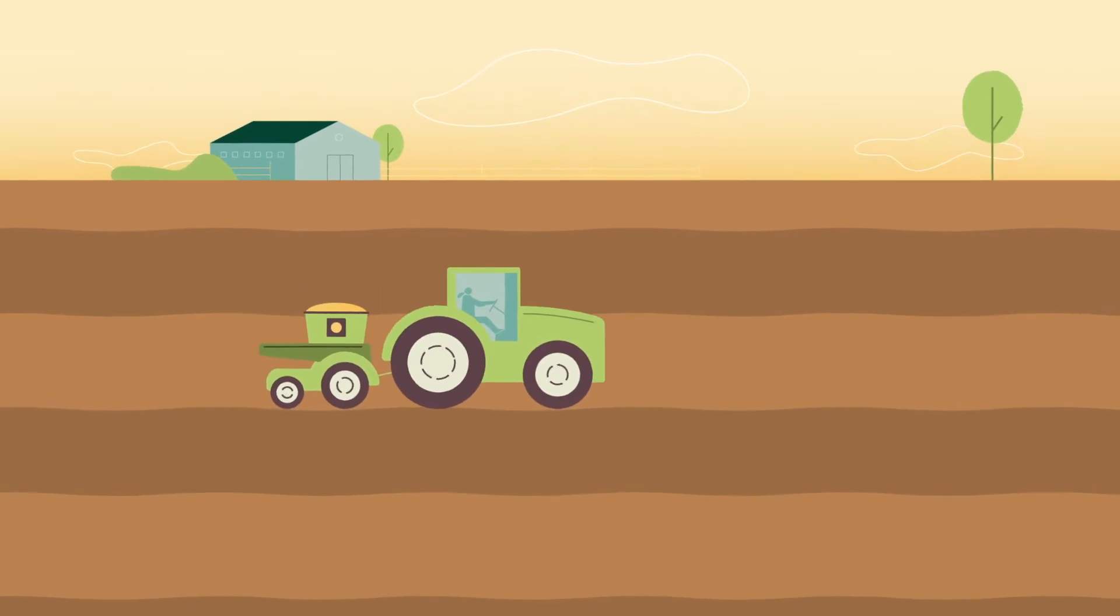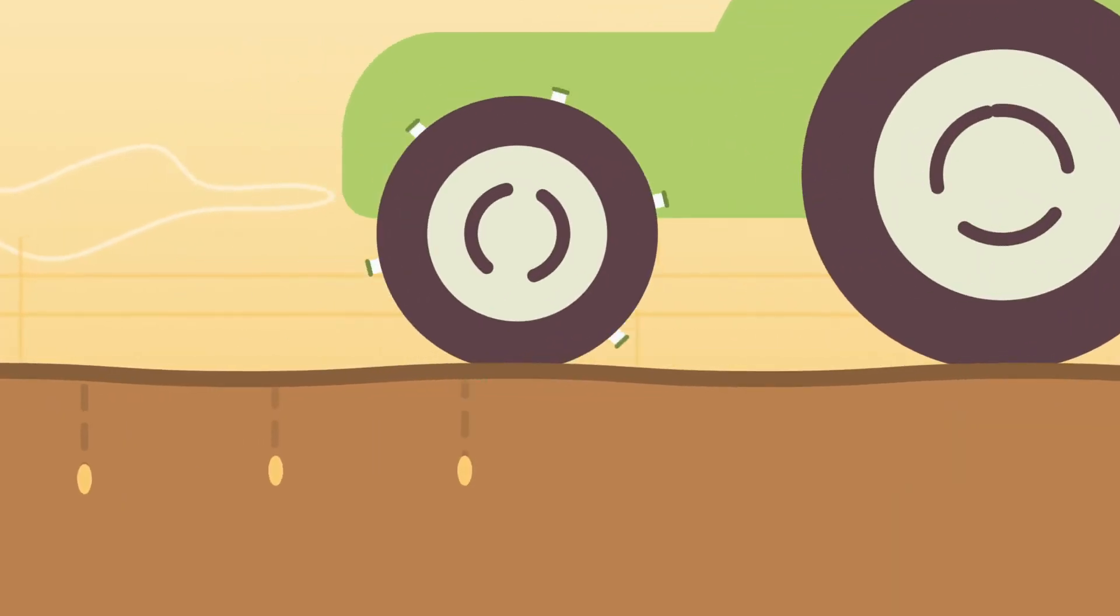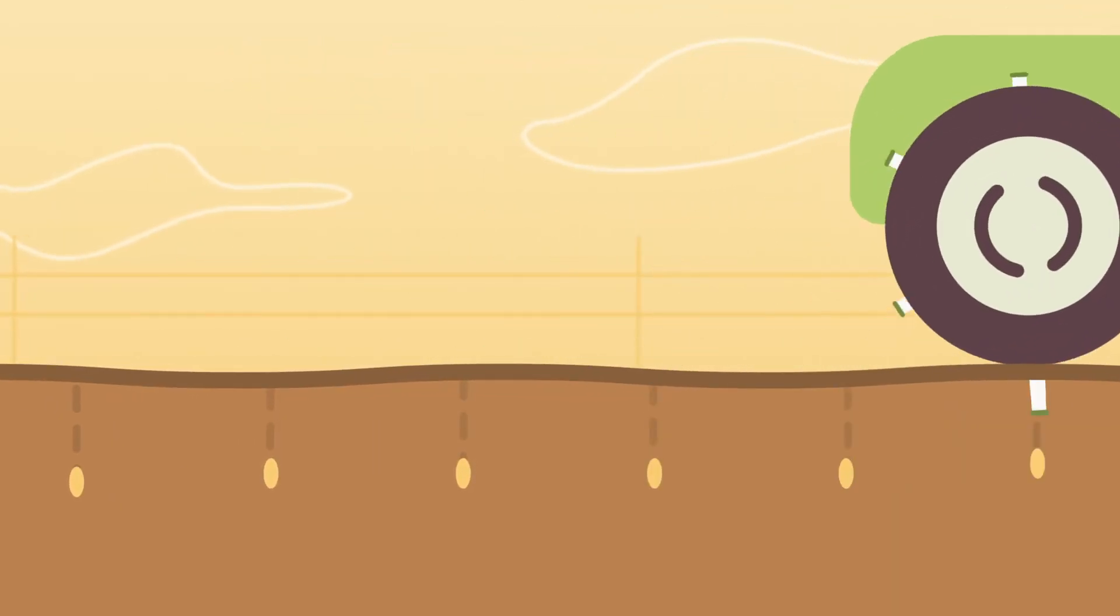In the spring, after preparing the soil, the farmer will then plant each soybean seed roughly an inch deep in the ground.